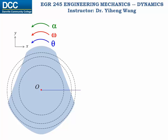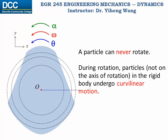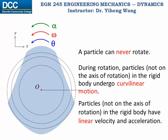A particle is an idealized concept of an object with no size or shape, therefore a particle can never rotate. Therefore during the rotation of the rigid body, all particles in this rigid body undergo curvilinear motion, and they follow a circular path. When the rigid body is undergoing rotation, the rigid body itself has angular velocity and angular acceleration, but the particles in the rigid body have linear velocity and linear acceleration. This is limited to particles that are not on the axis of rotation, since particles on the axis of rotation will have no motion.